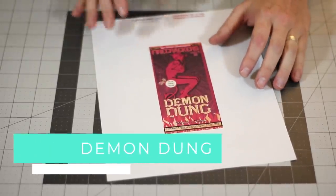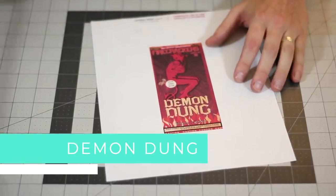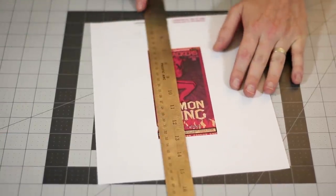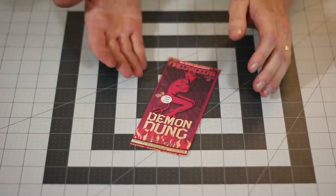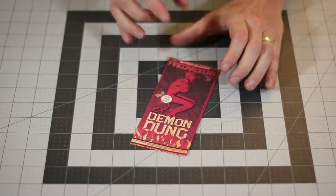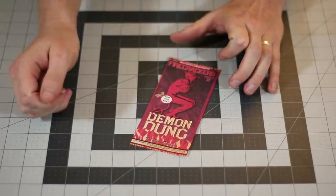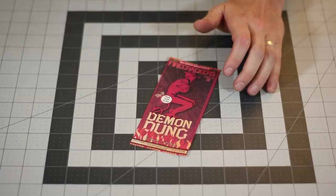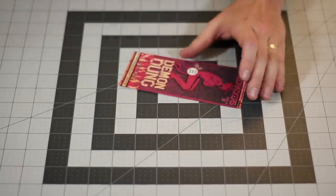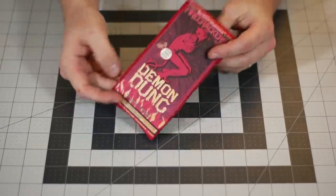Next, we'll do the Demon Dung Firecrackers. You just want to cut this out. Basically we're just going to be rebranding some Black Cats. Take that big package of Black Cats and remove the label carefully so that you don't rip the tissue paper. Then just glue this on it. When you're done, it should look like this.